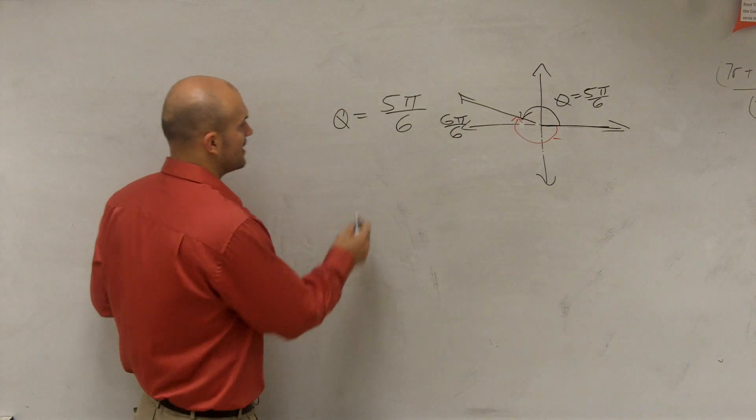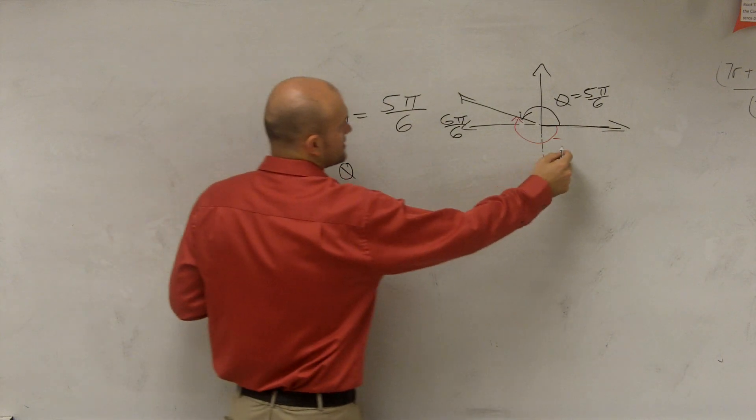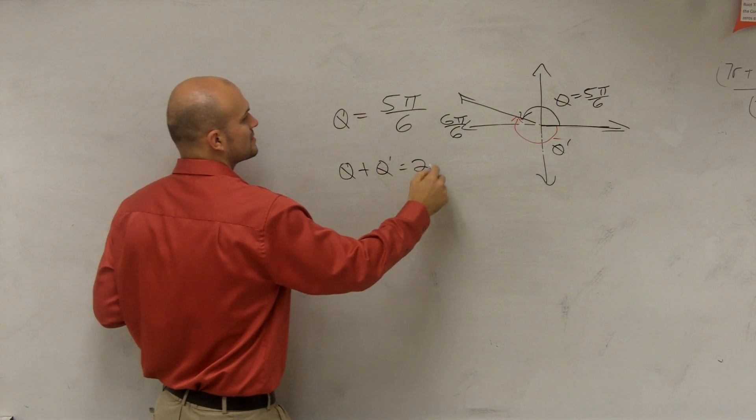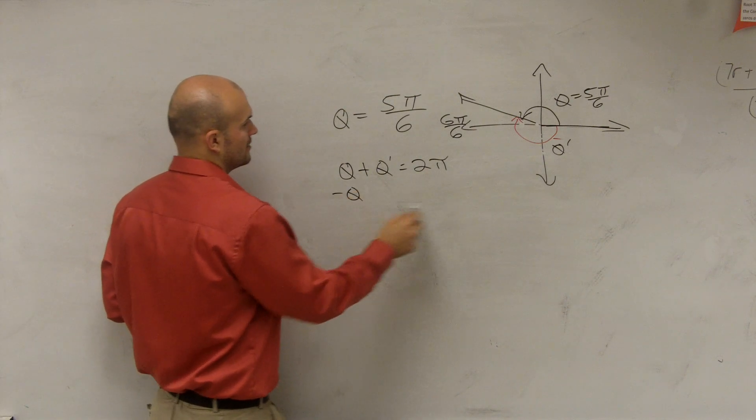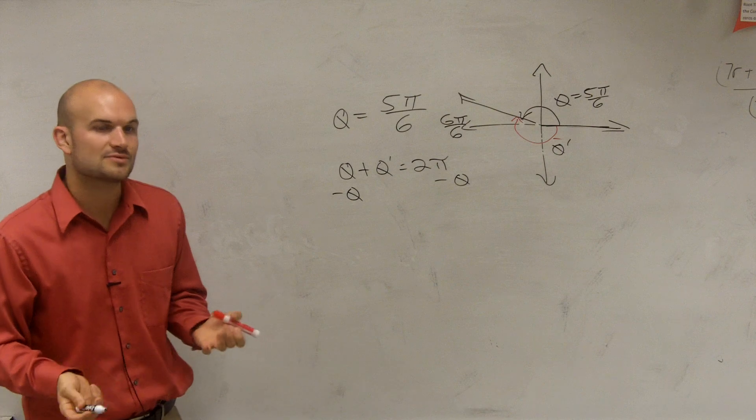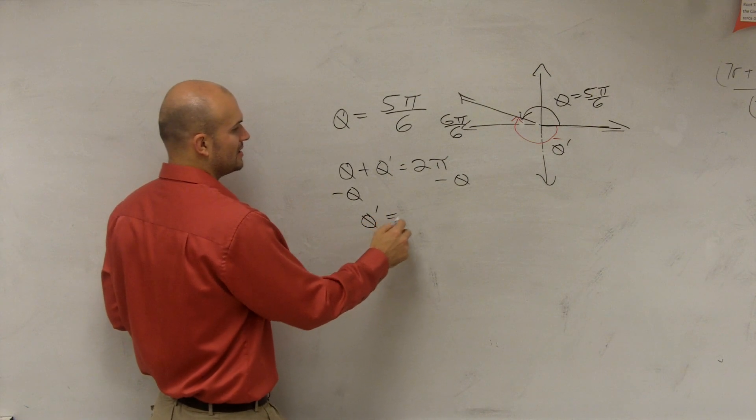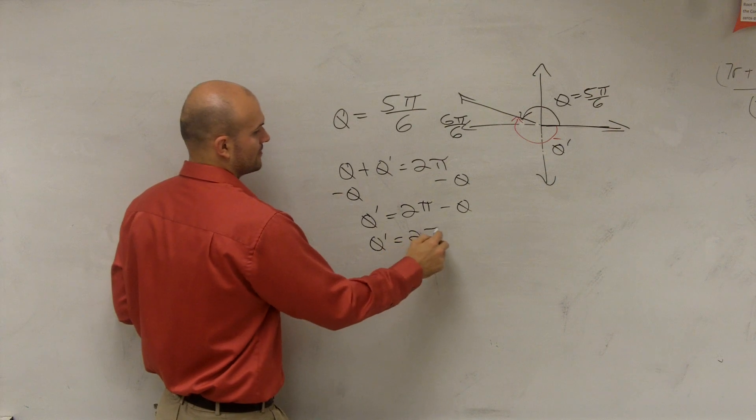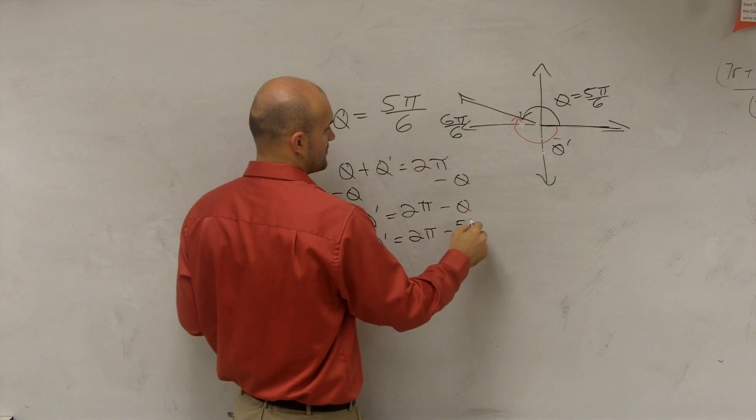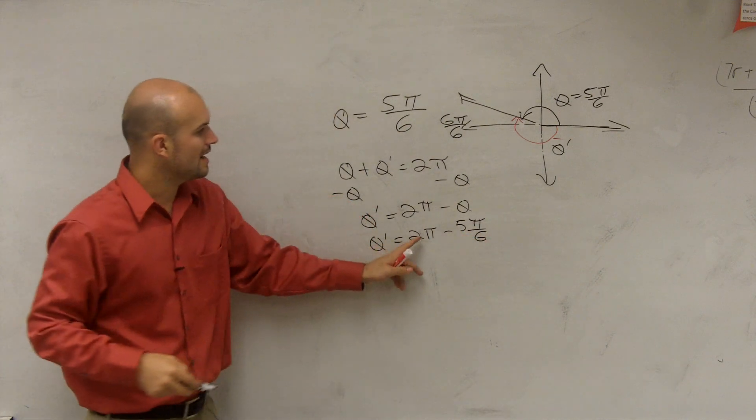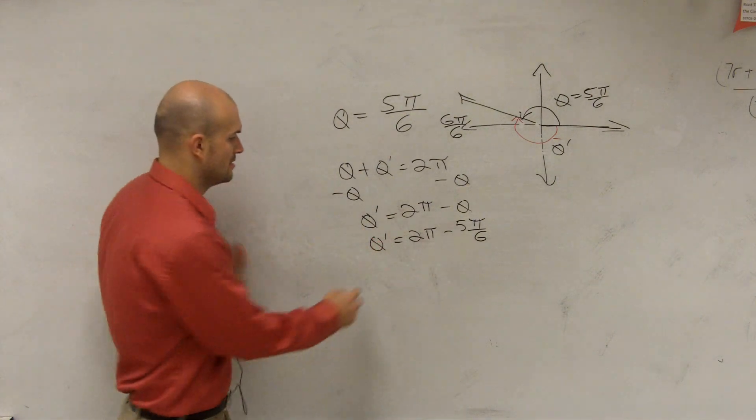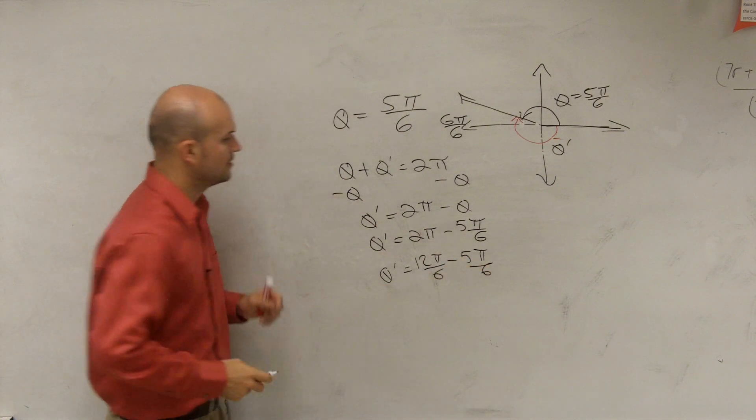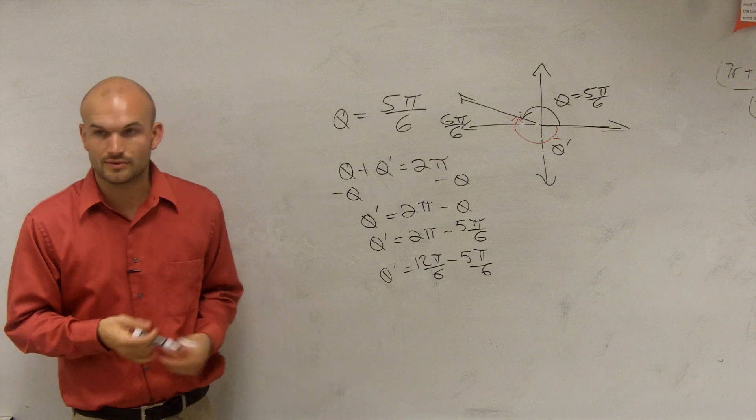So for my co-terminal angles, I could say that, we'll call this angle θ prime. If that's θ, we'll call this one θ prime. So I could say θ plus θ prime equals 2π, right? So I could just subtract θ. Now usually what we like to do is just add and subtract 2π from it, but for this one you could say well, θ prime equals 2π minus θ. So θ prime equals 2π minus 5π over 6. All right, so now how do I get 2π to be rewritten as a denominator of 6? We can write it as 12π over 6, right? So it ends up equaling 7π over 6.